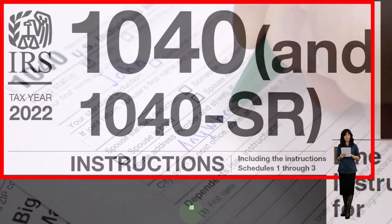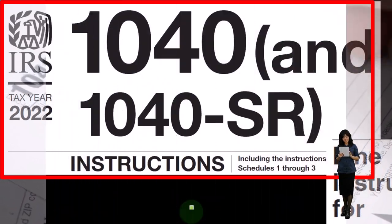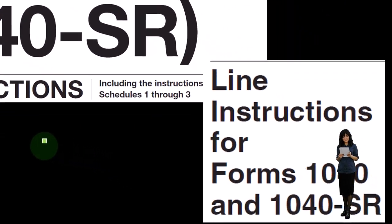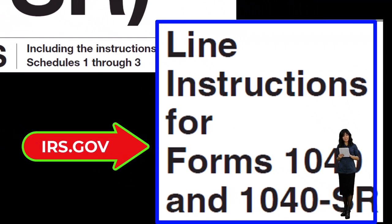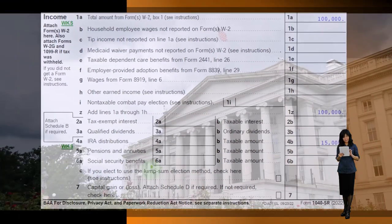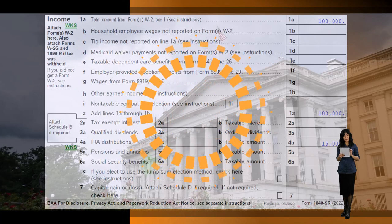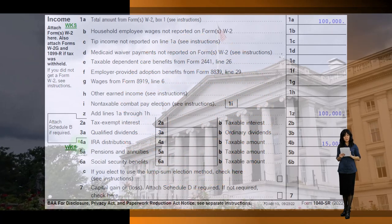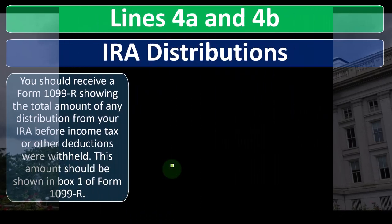Most of this information is going to come from the Form 1040 instructions, tax year 2022, line instructions. You can find these at the IRS website, irs.gov. The first page of the Form 1040 — we're focused here on line four — so let's get into the general concepts of this.